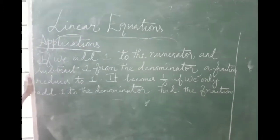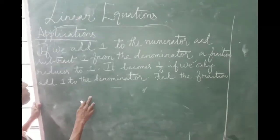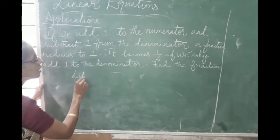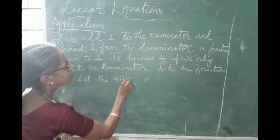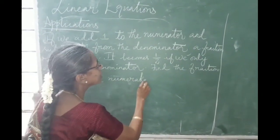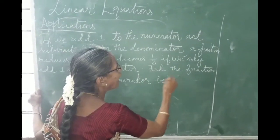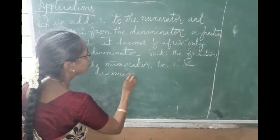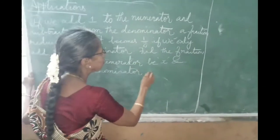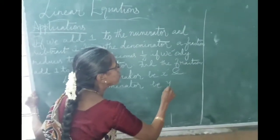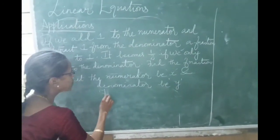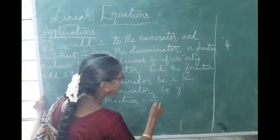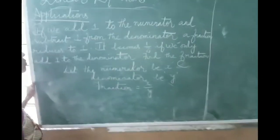So whenever we are starting about the fraction, fraction means it will be having a numerator and denominator. Therefore, let the numerator be x and denominator be y. What will be the fraction? Fraction will be equal to x by y. So the fraction is x by y, that is what you need to find out finally.